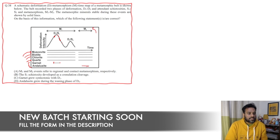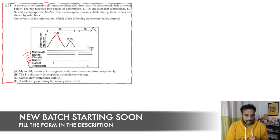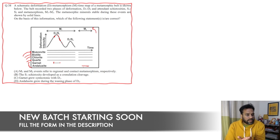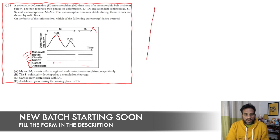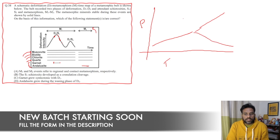Andalusite is a polymorph of aluminosilicate, like kyanite, sillimanite, and andalusite. Andalusite is stable at medium to high temperature but low pressure conditions. If you look at the PT graph — P on the vertical axis and T on the horizontal — kyanite occupies the high-pressure region, sillimanite the high-temperature region, and andalusite is found in the low-pressure region.